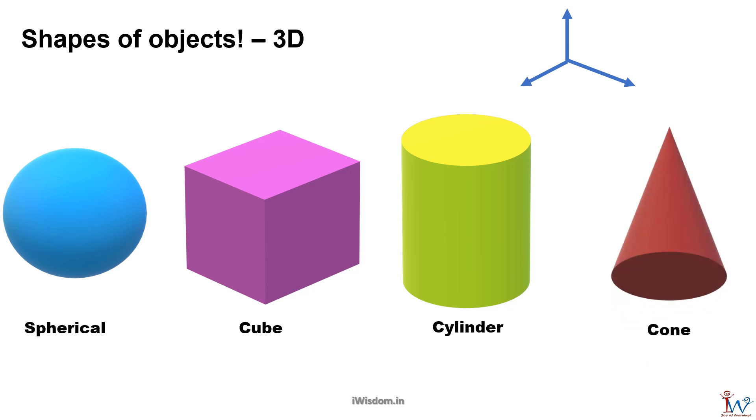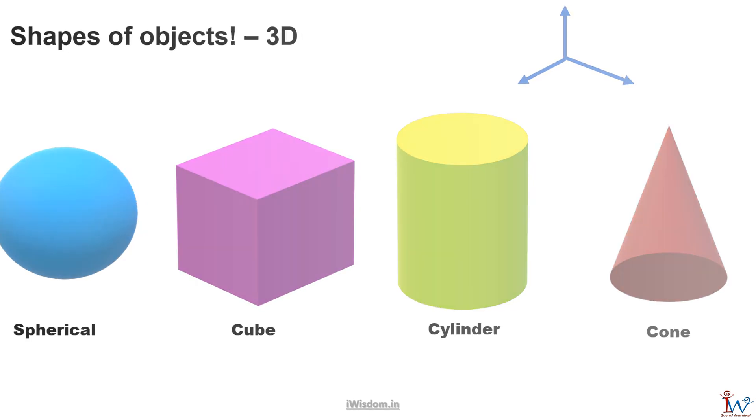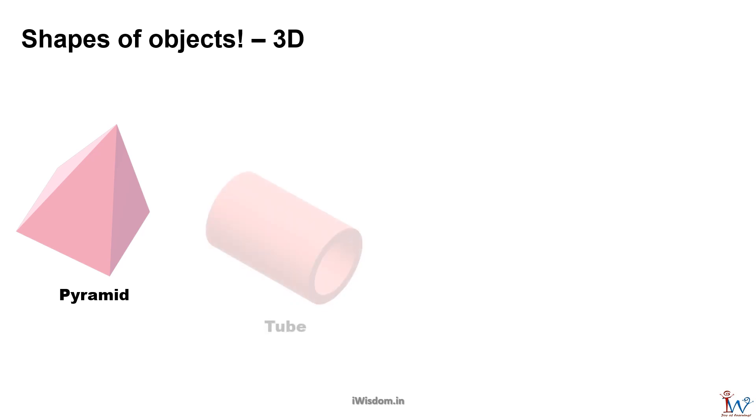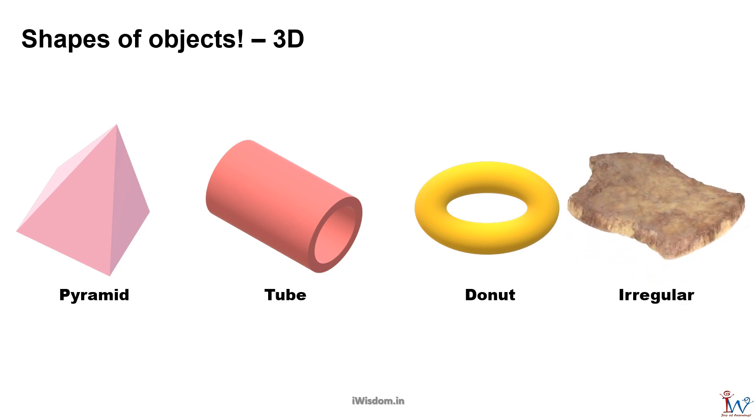Cone - ice cream is an example. Pyramid - cut piece of watermelon is an example. Tube - a bangle stack is an example. Donut - the sweet donuts are examples. Then you can have shapes that are irregular like stone, that does not fit to any shape.